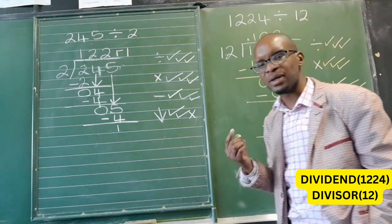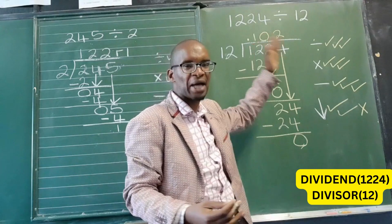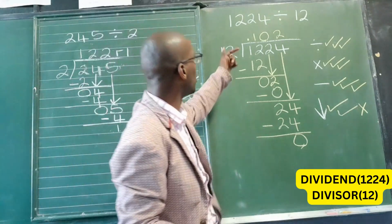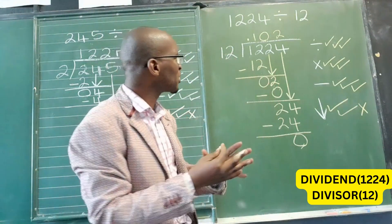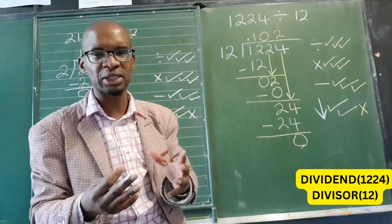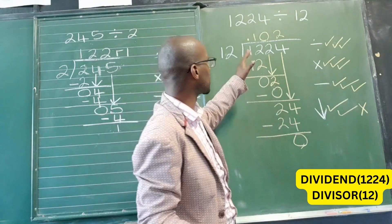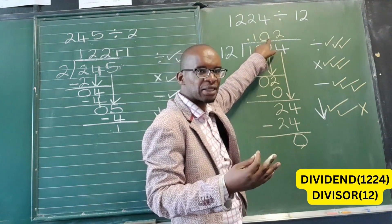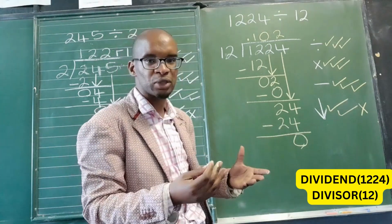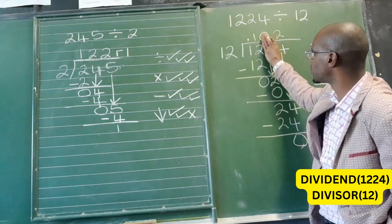This means 12 goes into 1224 one hundred and two times. I also want to introduce a term I haven't mentioned: the answer you get when dividing is called the quotient. So 102 is our quotient. Our divisor is 12, our dividend is 1224, and our quotient — the answer — is 102.